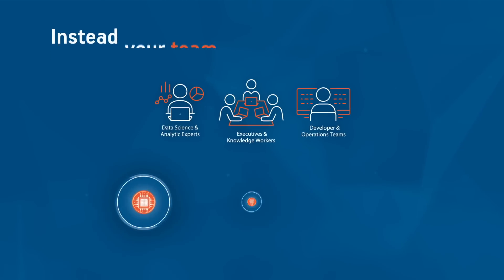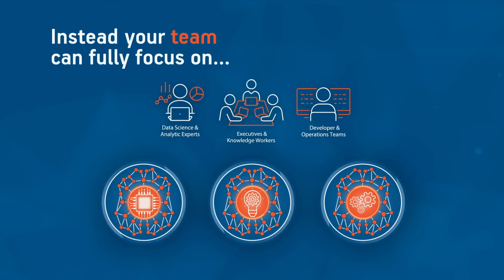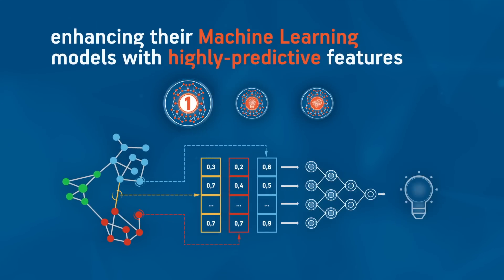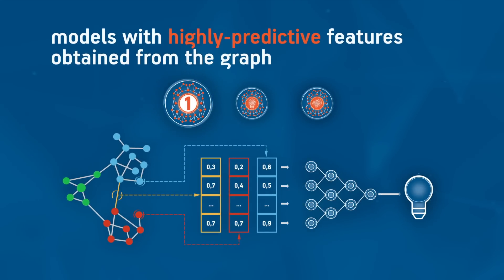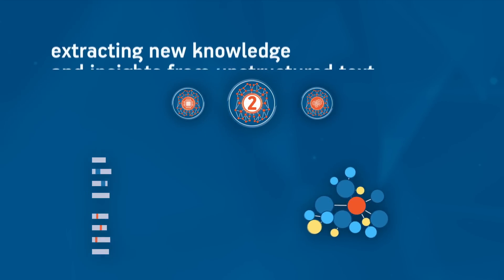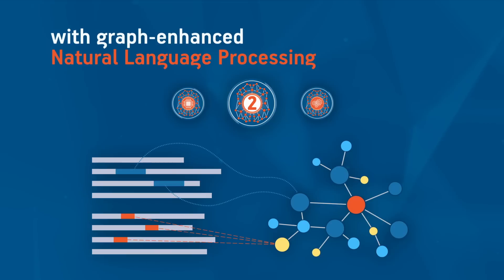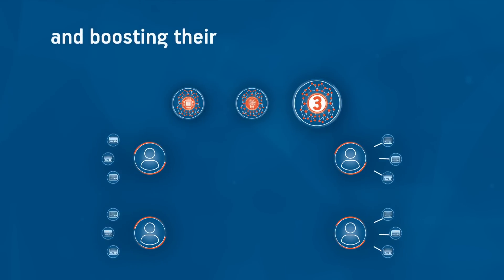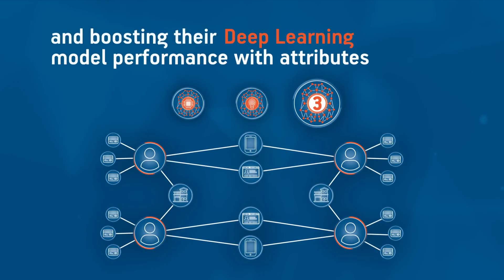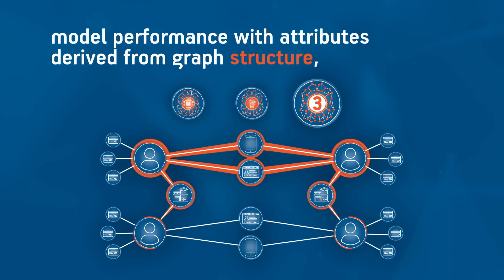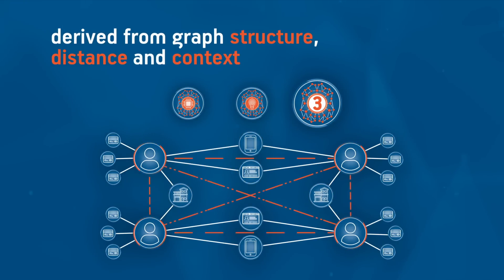Instead, your team can fully focus on enhancing their machine learning models with highly predictive features obtained from the graph, extracting new knowledge and insights from unstructured text with graph-enhanced natural language processing, and boosting their deep learning model performance with attributes derived from graph structure, distance, and context.